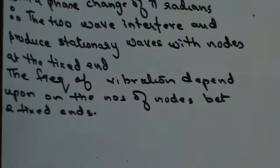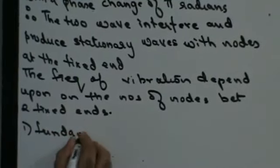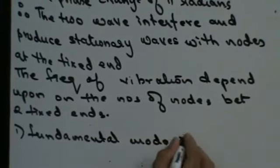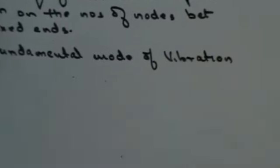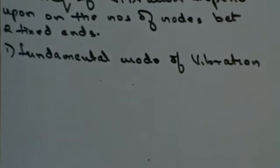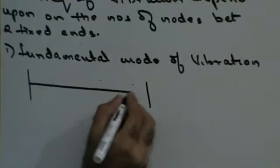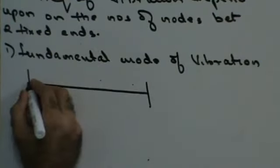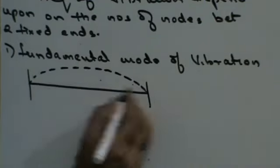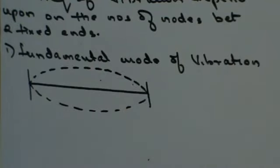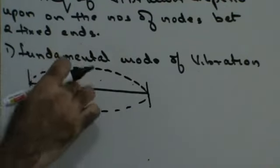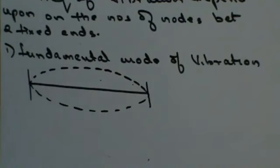Let's first find out what is the fundamental mode of vibration. If the string is stretched between rigid supports and it is plucked in the middle, it vibrates with two nodes at the ends and an antinode in the middle. This is called the fundamental mode of vibration — when the string is moving once on one side and once on the other side.